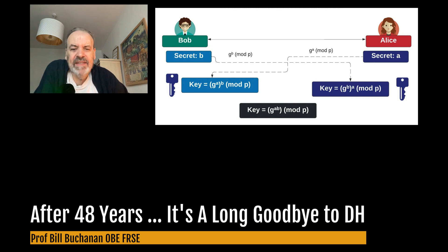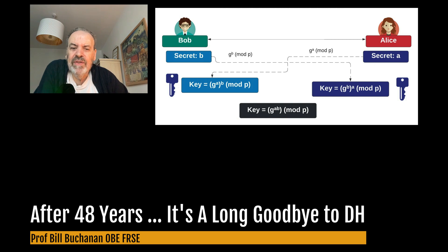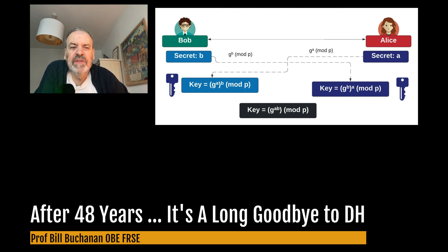Alice will generate little a and create big A, which is the public value of G to the power of a mod P. Bob creates his secret little b, and then creates his public key of G to the power of b mod P. They then exchange the values, and because in logarithms G to the power of a to the power of b is actually equal to G to the power of ab, Bob and Alice can generate the same shared key. It was wonderful.